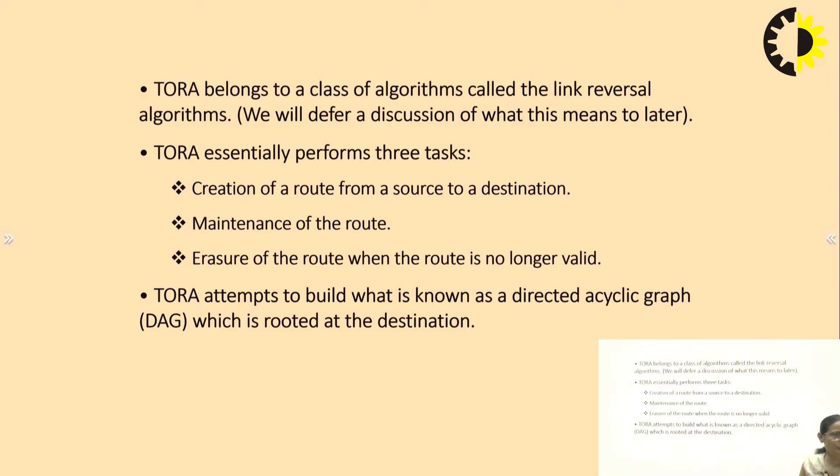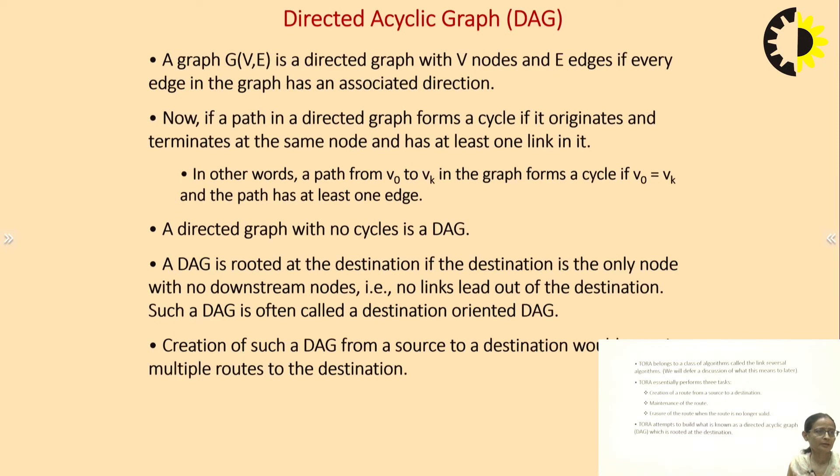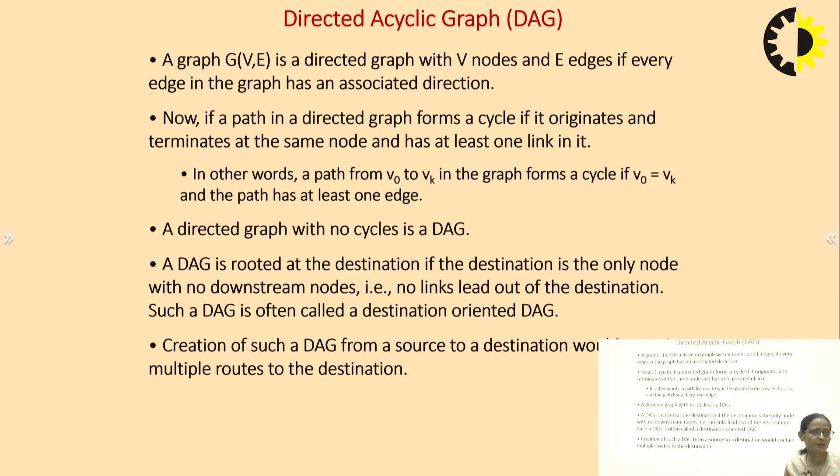TORA attempts to build what is known as DAG which is rooted at the destination. For TORA we require a Directed Acyclic Graph. What is a directed acyclic graph? We are aware what is a graph - it is a set of vertices and edges. In the case of the directed graph with V nodes and E edges, if every edge in the graph has an associated direction then that graph becomes a directed graph.